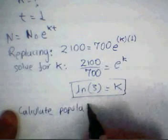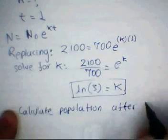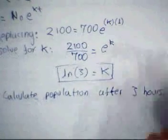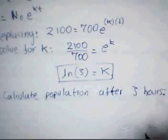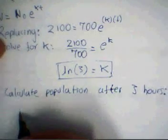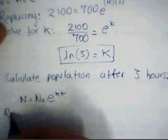Population after 3 hours. And how do we do that? Well, we just use the expression that we already know. We know that N equals N₀ e to the kt, and then replacing.